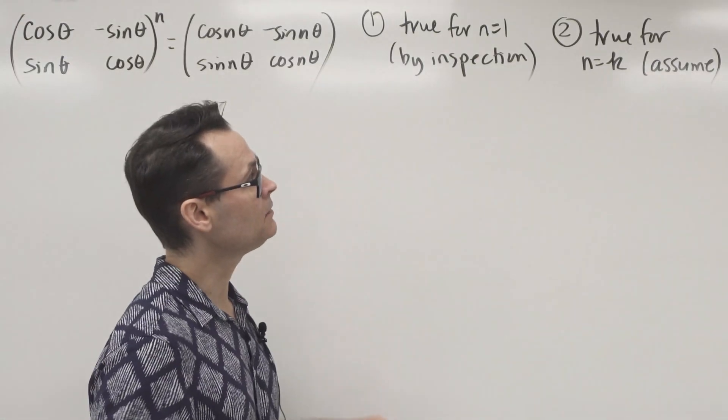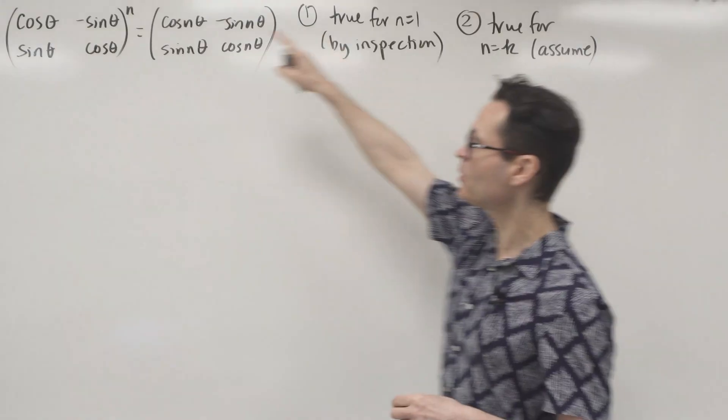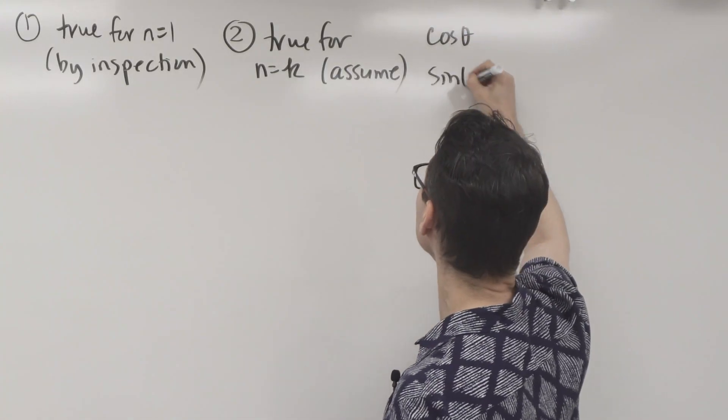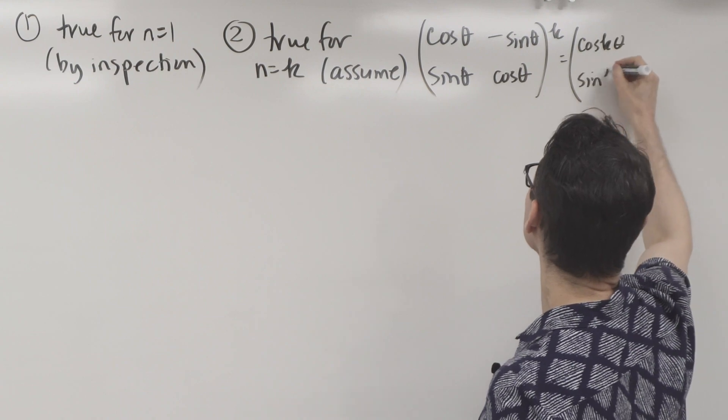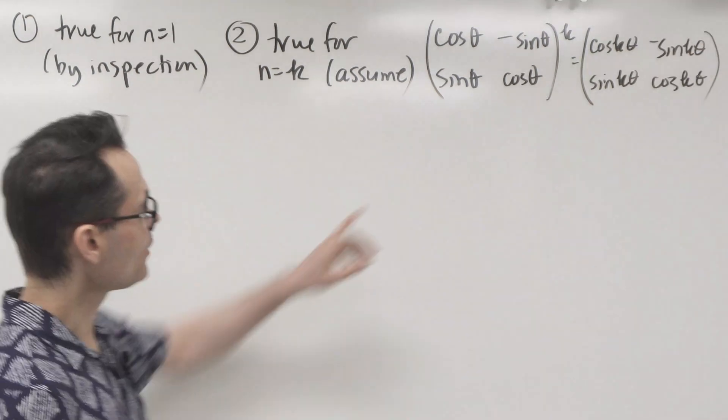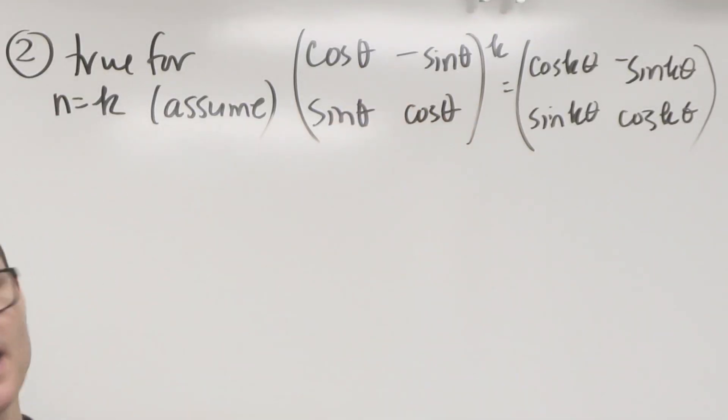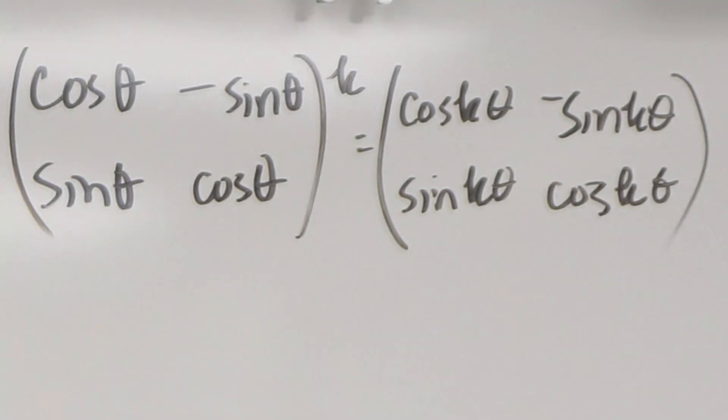Well, what does that mean? It means that if I take the k and I put it where the n is, this is what I get. So if we're assuming that the statement is true for n equals k, then this is naturally true. And we come back to that in the next step. We can use any assumed information in our induction step, which is our next step.